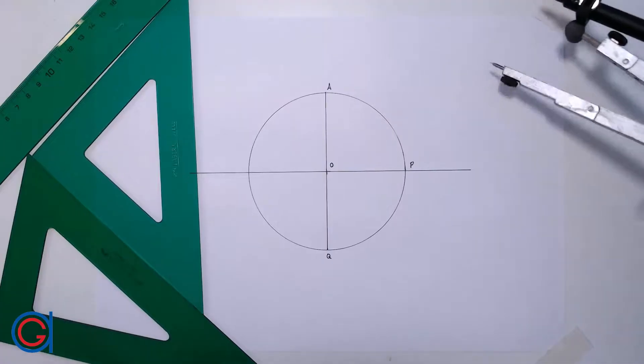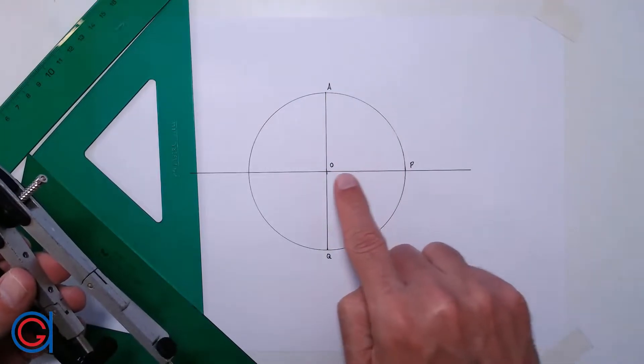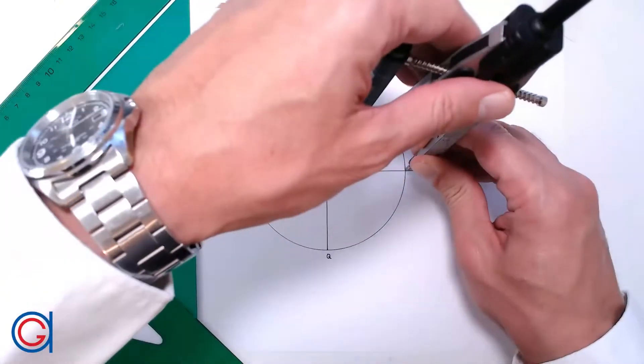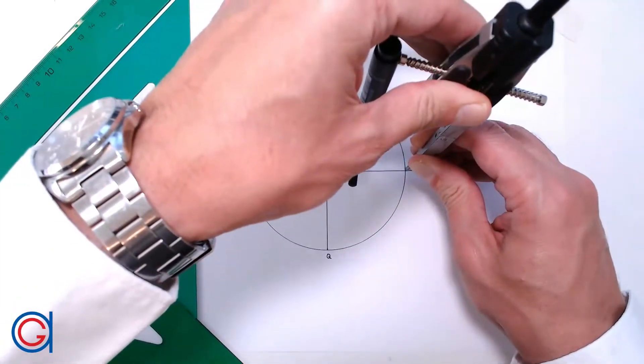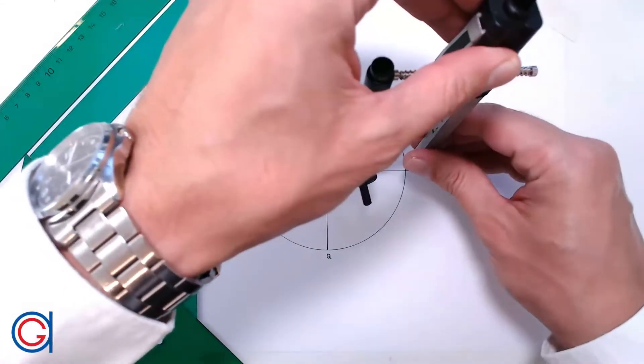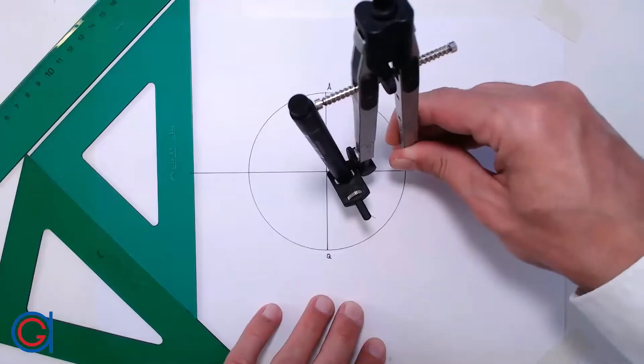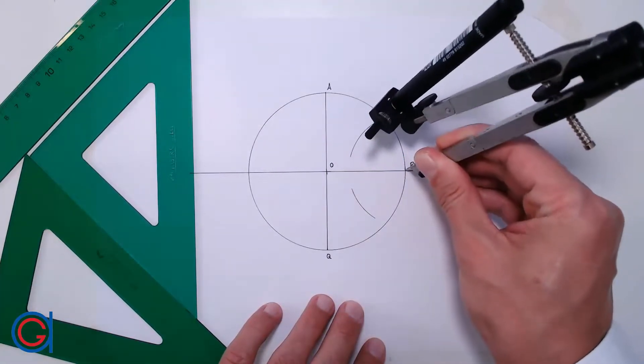So the next step, we are going to calculate the perpendicular bisector of the radius OP. To do this, with our compass set on the point O and a radius slightly greater than half the radius OP, we scribe an arc above and below the radius, as can be seen here.